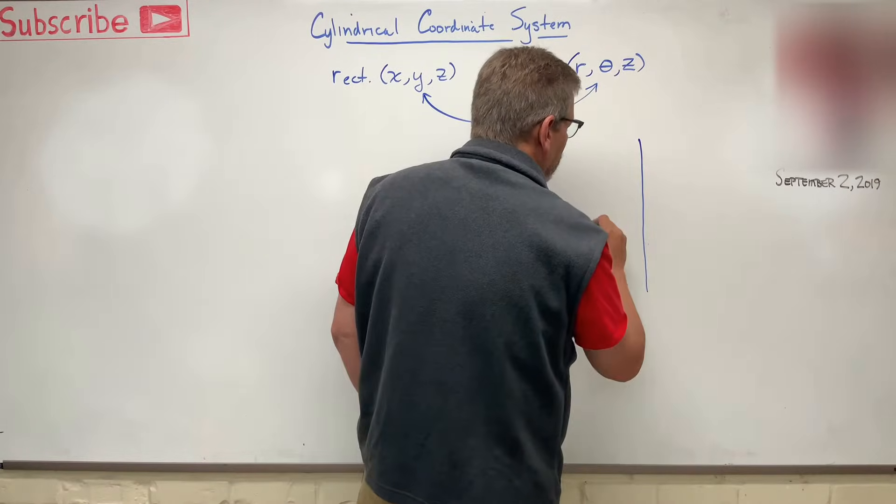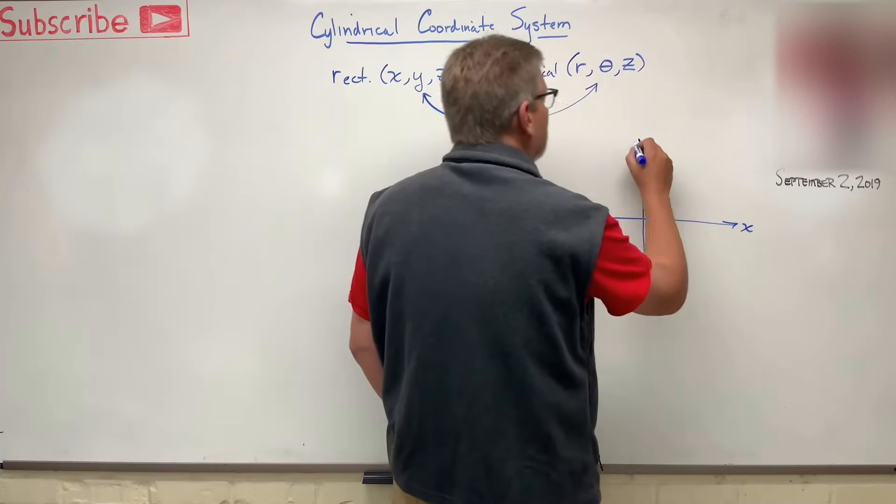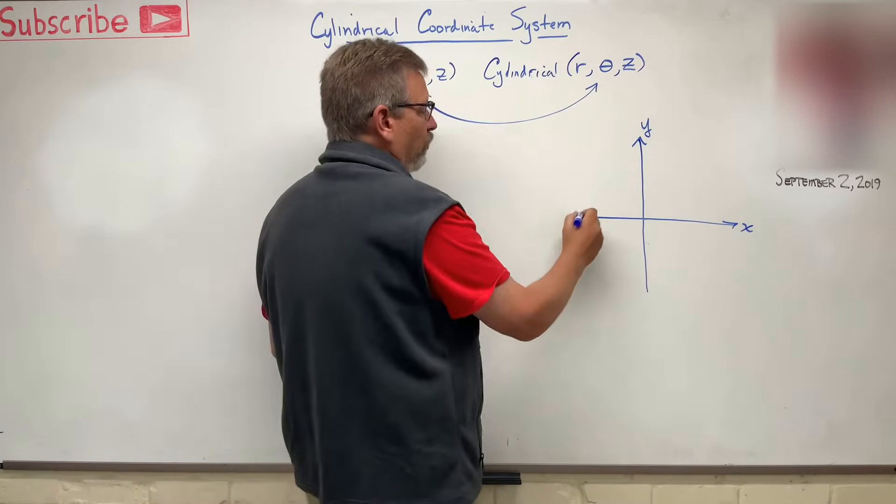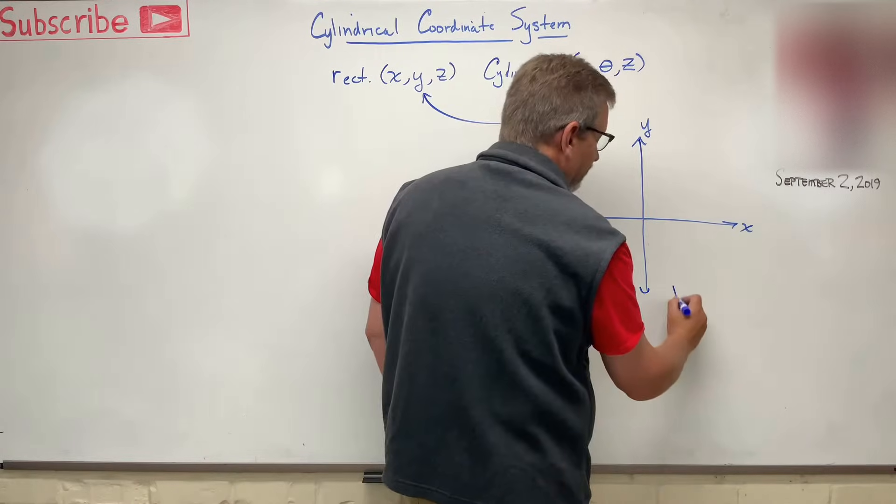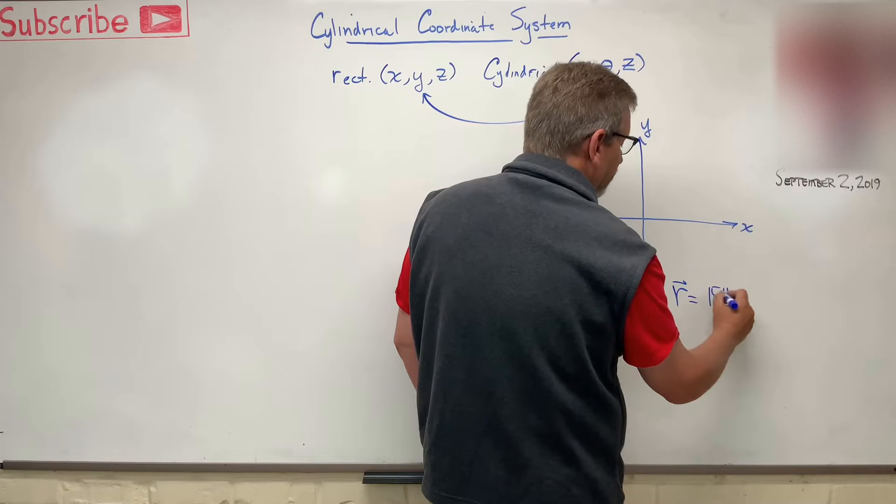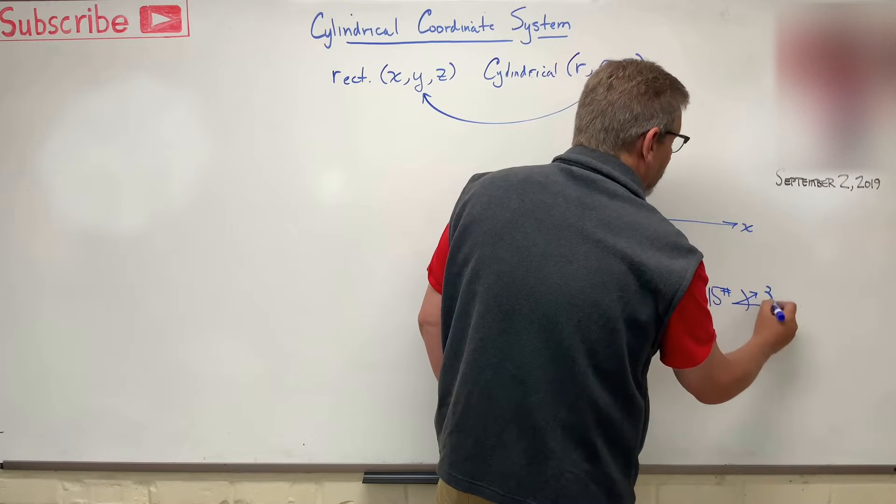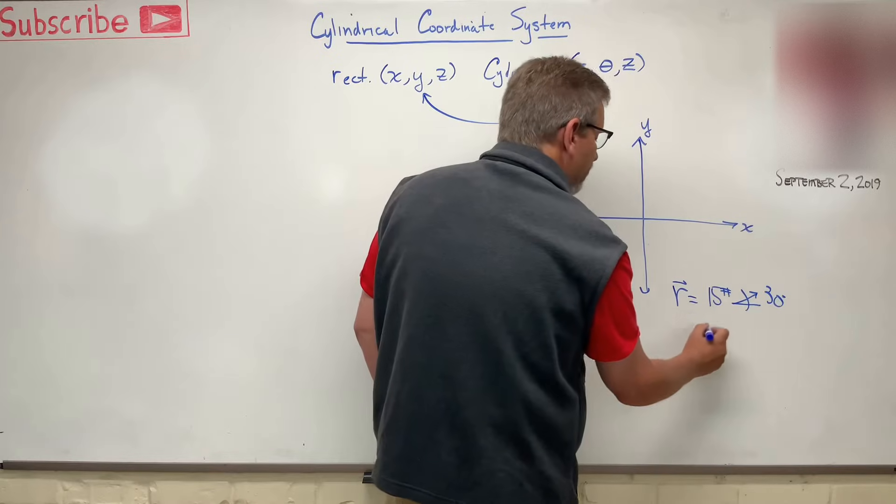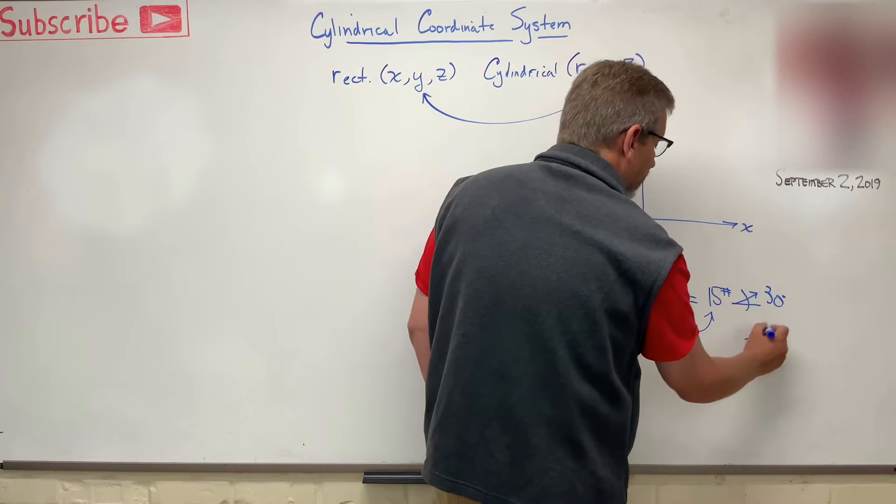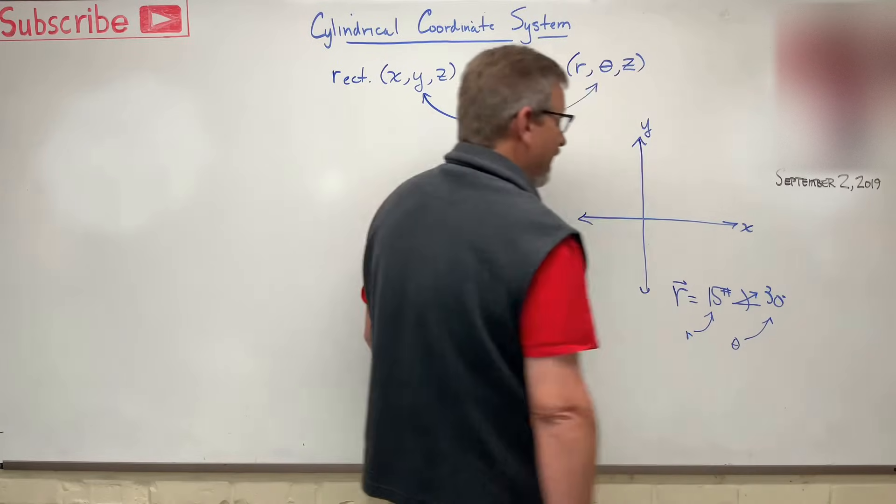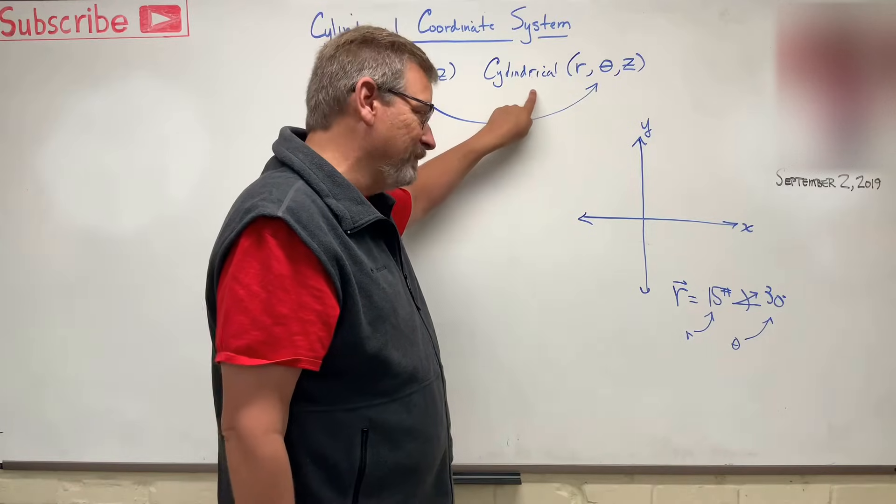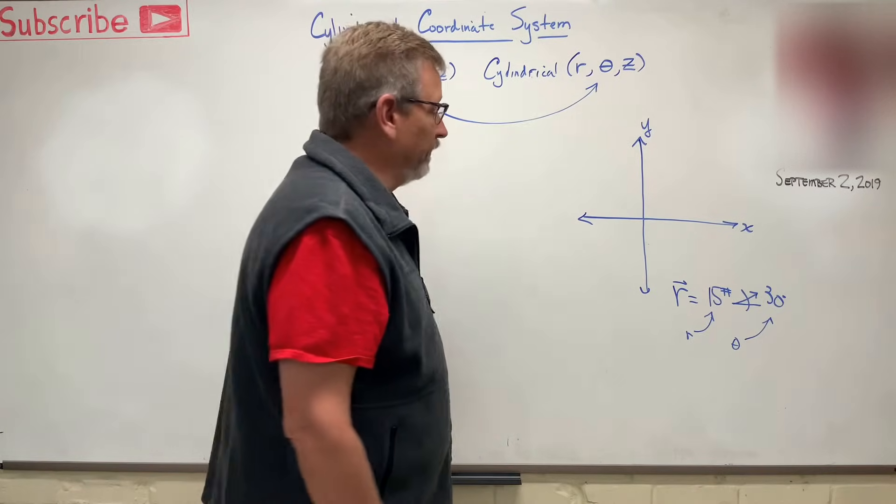Here's just a simple coordinate system. Here was our x, here was our y, and we were given polar coordinates. If you remember polar coordinates, we said like vector r is equal to 15 pounds at an angle of 30 degrees. And this was our r, or the magnitude of r, and this guy over here was our theta. And it's the exact same thing here in cylindrical coordinate systems. This is not something new. This is something we ought to be able to do.